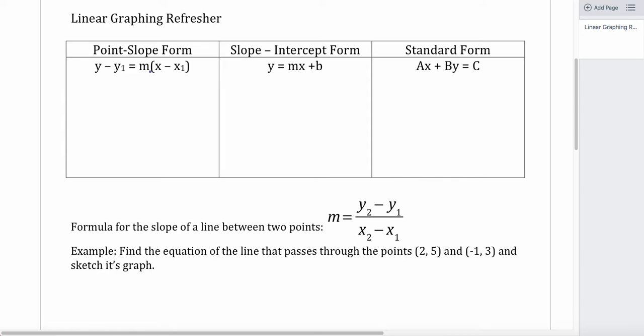So this is just based on what I observed yesterday — our need to review lines a little bit. There are three forms: point-slope form, slope-intercept form, and standard form.